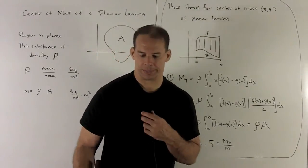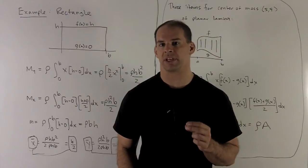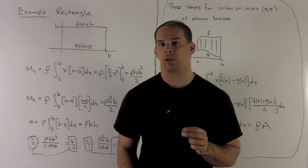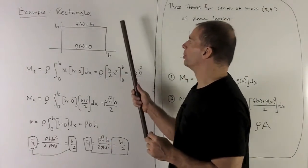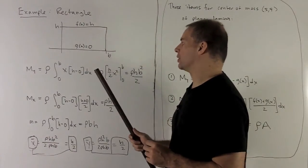Let's do some examples. Let's start with the simplest case, the rectangle, base b and height h. So here's our picture. Top function's h, bottom function's 0.